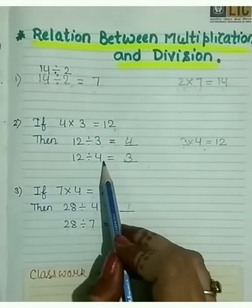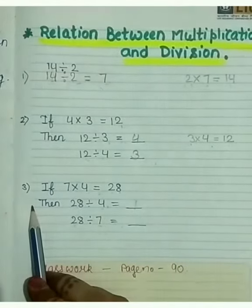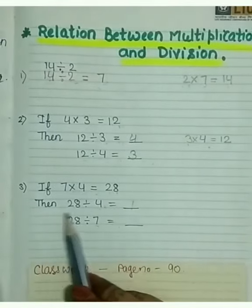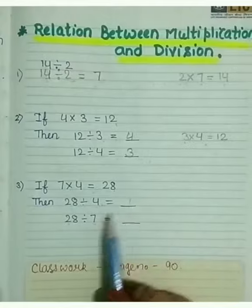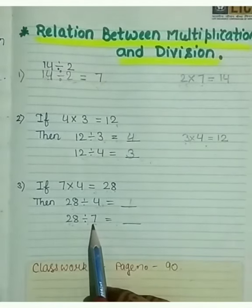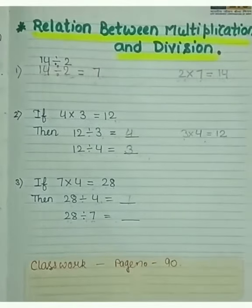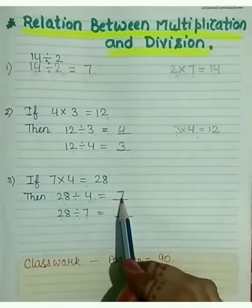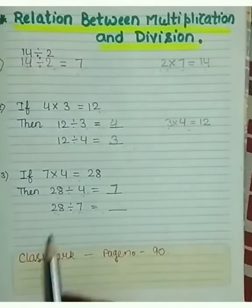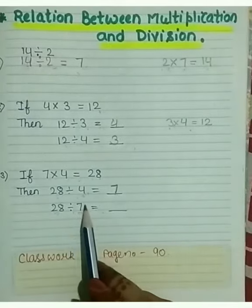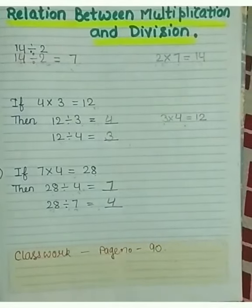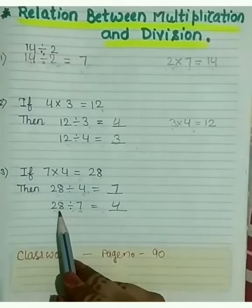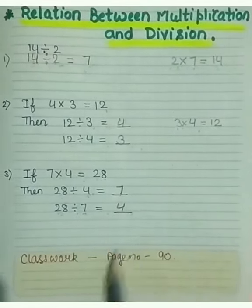Next example, if 7 multiply 4 equals 28. Then 28 divided by 4 equals what? And 28 divided by 7 equals what? In the same way, if 28 is grouped into 4's, 7 groups are formed. And if 28 is grouped into 7's, 4 groups are formed. 28 divided by 4 equals 7, and 28 divided by 7 equals 4. OK children?